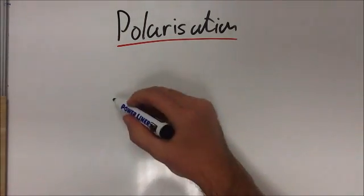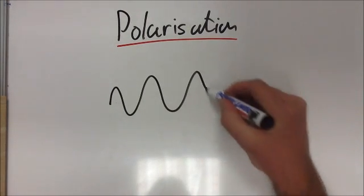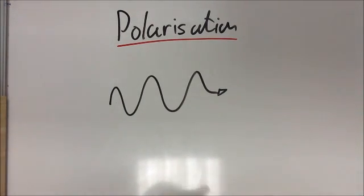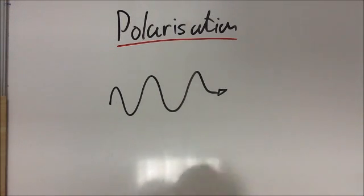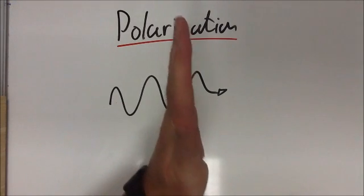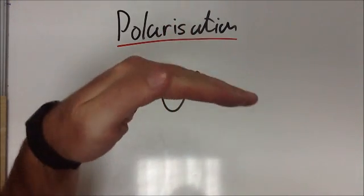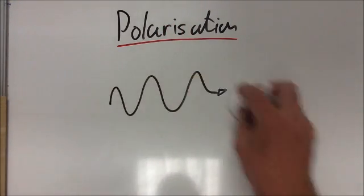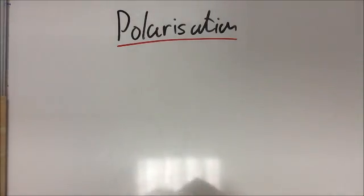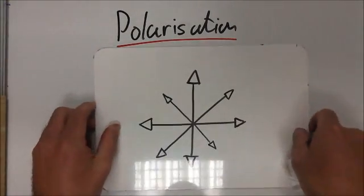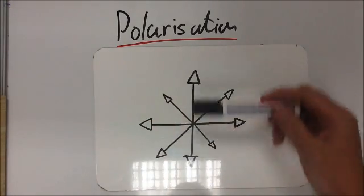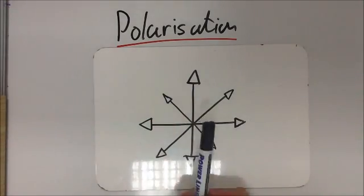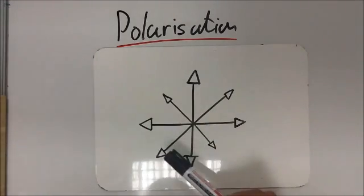We know that light is a wave. When light oscillates — that means moves up and down or backwards and forwards — light can oscillate in all sorts of different directions. Not only can it oscillate vertically, it can oscillate horizontally as well. Imagine you're looking down a wave here. This source is coming from the Sun and the wave is oscillating horizontally, vertically, and in lots of other planes as well.